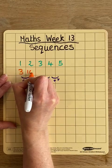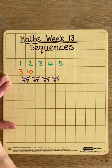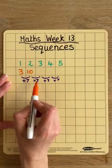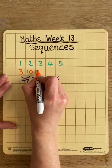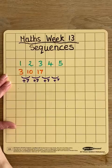So that is the second number in my sequence, the second term. Then 10 add 7 is 17. That's the third term.